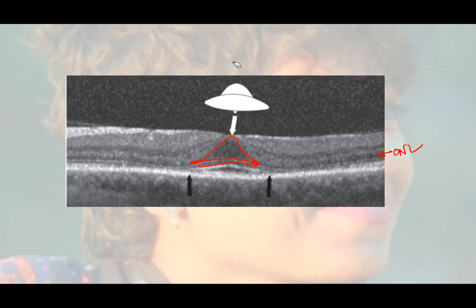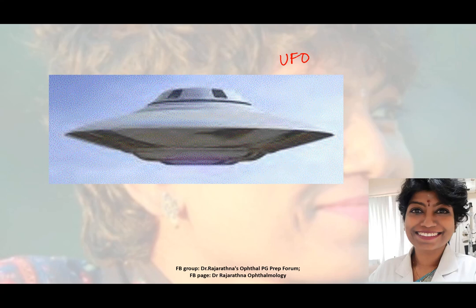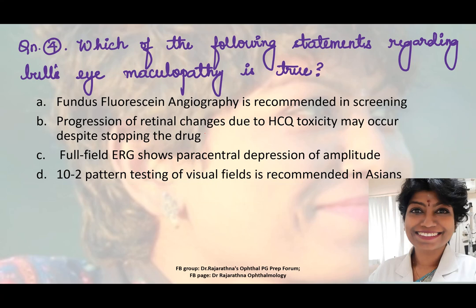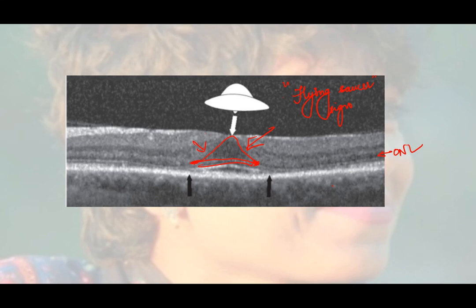The flying saucer sign is named because the shape of the thinned para-foveal area resembles an unidentified flying object from sci-fi movies. The flying saucer sign on OCT is seen in bull's eye maculopathy due to hydroxychloroquine or chloroquine toxicity. The beautiful anatomy visible on OCT is one of the reasons we love reading OCTs.